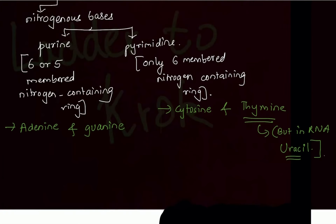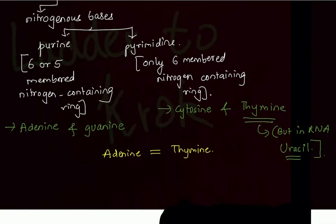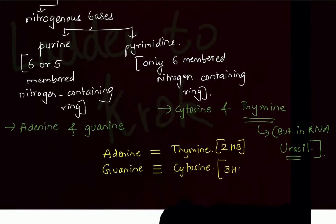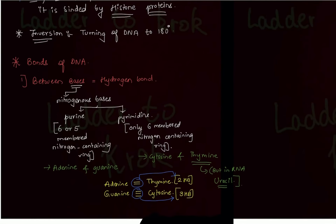Hydrogen bonds are formed between purines and pyrimidines. Adenine (a purine) forms two hydrogen bonds with thymine, and guanine (a purine) forms three hydrogen bonds with cytosine. So: adenine and thymine — two hydrogen bonds; guanine and cytosine — three hydrogen bonds.